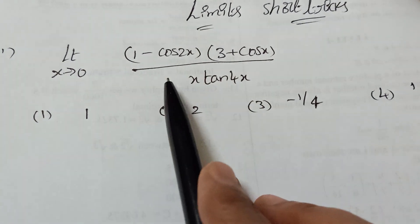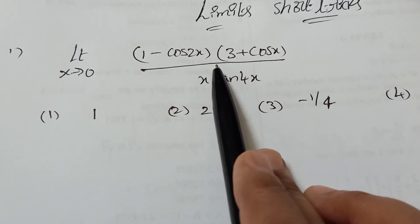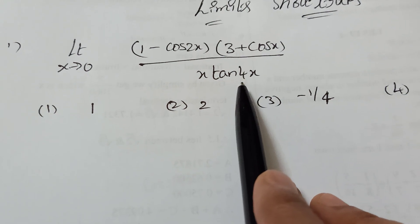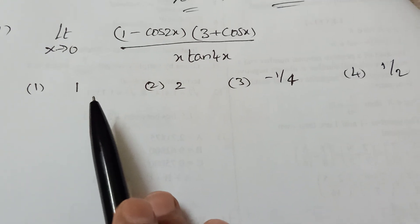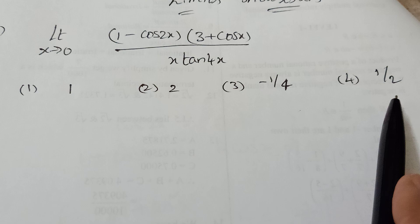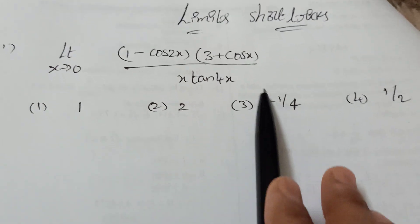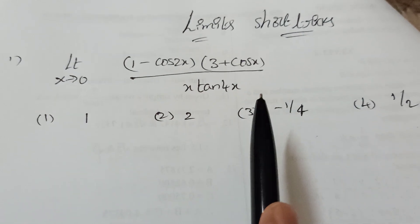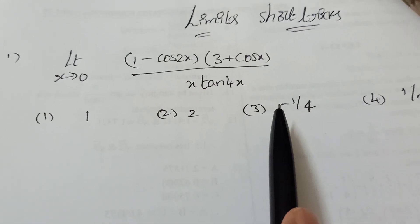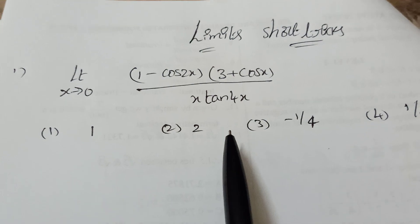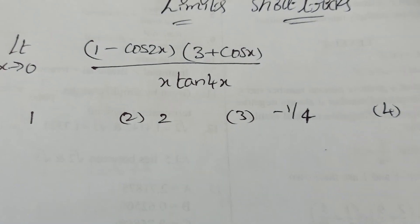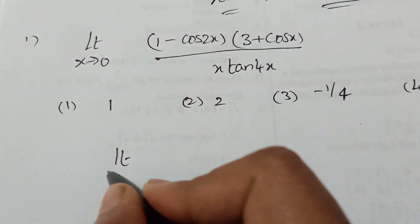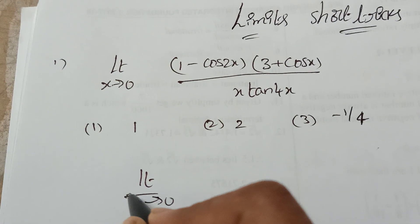Now come to the point. The first question: limit of (1 − cos2x)(3 + cosx) divided by x·tan4x. Options given are 1, 2, −1/4, 1/2. This problem was asked in 2013 and also in MHT-CET.